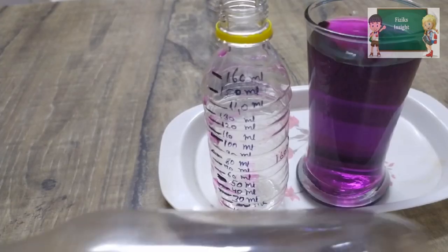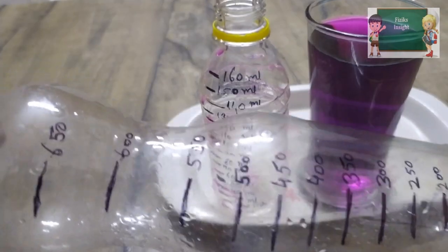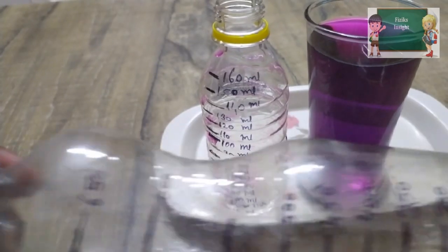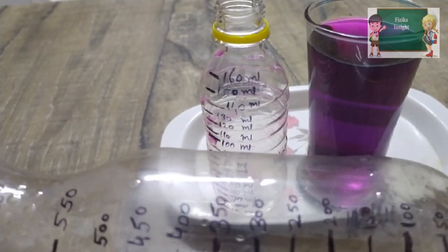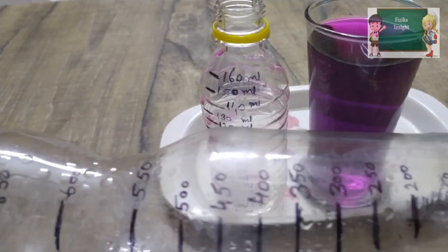In a similar way, we have also made a cylinder of 650 ml using a 50 ml cylinder by making graduations of 50 ml each.